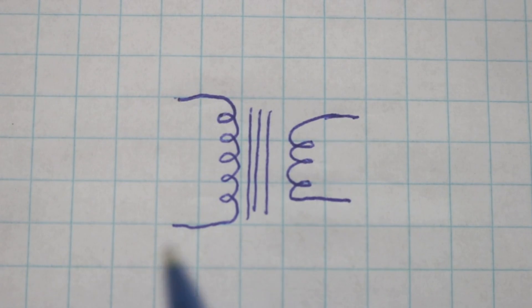So you apply a voltage to one coil and obtain another voltage in the other coil. The relation of the voltages is given by the relation of the number of windings in each coil.